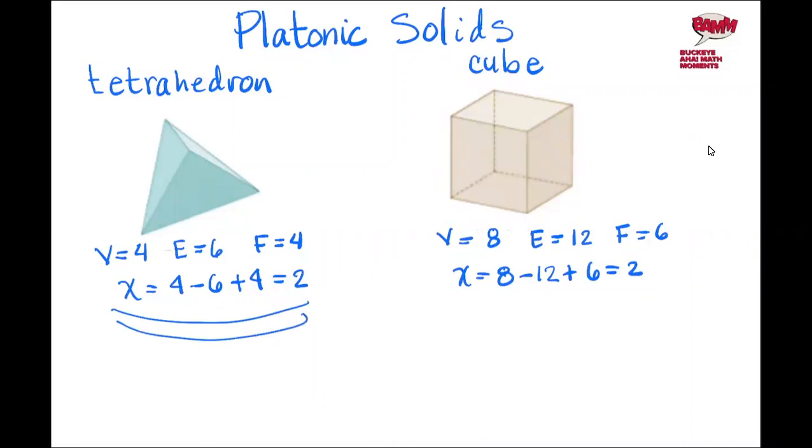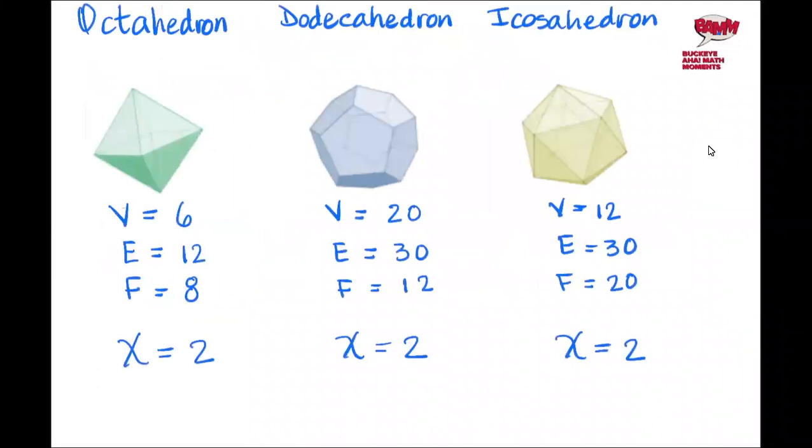When we do it for the cube, 8 minus 12 plus 6, we also get two. Take a look at the other Platonic solids and if we count carefully, we see that the Euler characteristic for all these is equal to two.